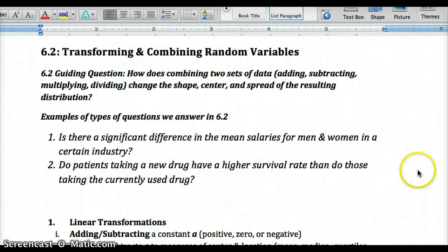So in 6.2, we're looking at transforming and combining random variables. It should seem somewhat familiar as we've already done this. Now we're doing it with probability. So I want you to think about how does changing two sets of data, combining two sets of data, change shape, center, and spread of the resulting distribution. So now instead of just multiplying by a number or adding a number, we're combining data sets. So here's some examples of questions that this would address. Is there a difference, significant difference in the mean salaries for men and women in a certain industry? Big hot button issue in the last election, like equality between men and women's salaries. Do patients taking a new drug have a higher survival rate than those taking the currently used drugs? So we would subtract values. We're looking for a difference here and then looking to see what the difference is and how that might change the shape, center, and spread of the resulting distribution.